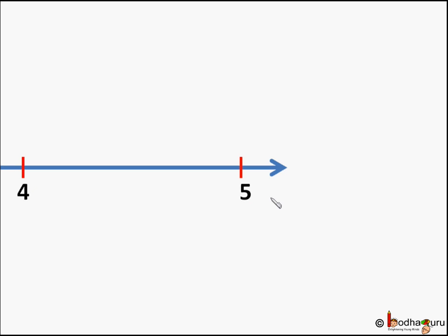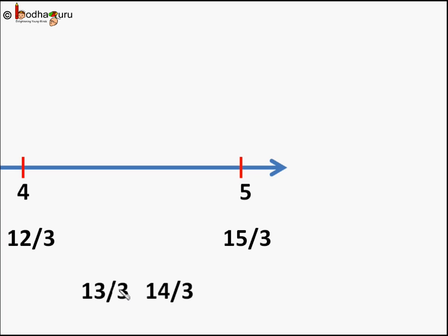Now there is another interesting way to find some rational numbers between 4 and 5. There are fractions between 4 and 5, so we represent 4 and 5 as fractions too. So we can write 4 as 12/3 because 12/3 is 4, and we can write 5 with the same denominator, 15/3, which is also 5. So now between 4 and 5, that is 12/3 and 15/3, we can find some more fractions like 13/3 and 14/3.